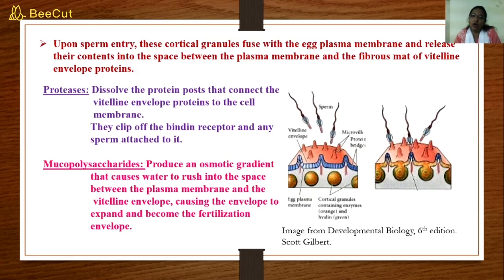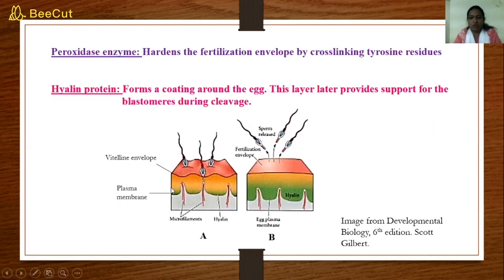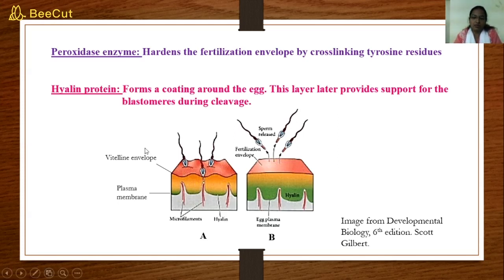The next component is mucopolysaccharides. These create an osmotic gradient, which results in the entry of water between the vitelline envelope and the plasma membrane. You can see in the diagram that the gap between the vitelline envelope and the plasma membrane has increased due to this water entry.